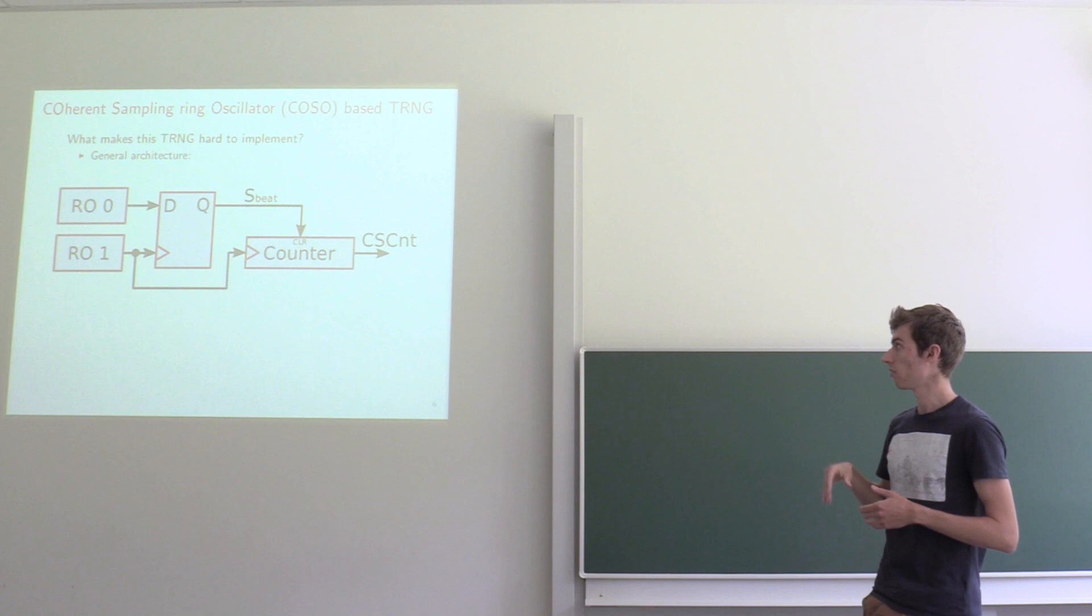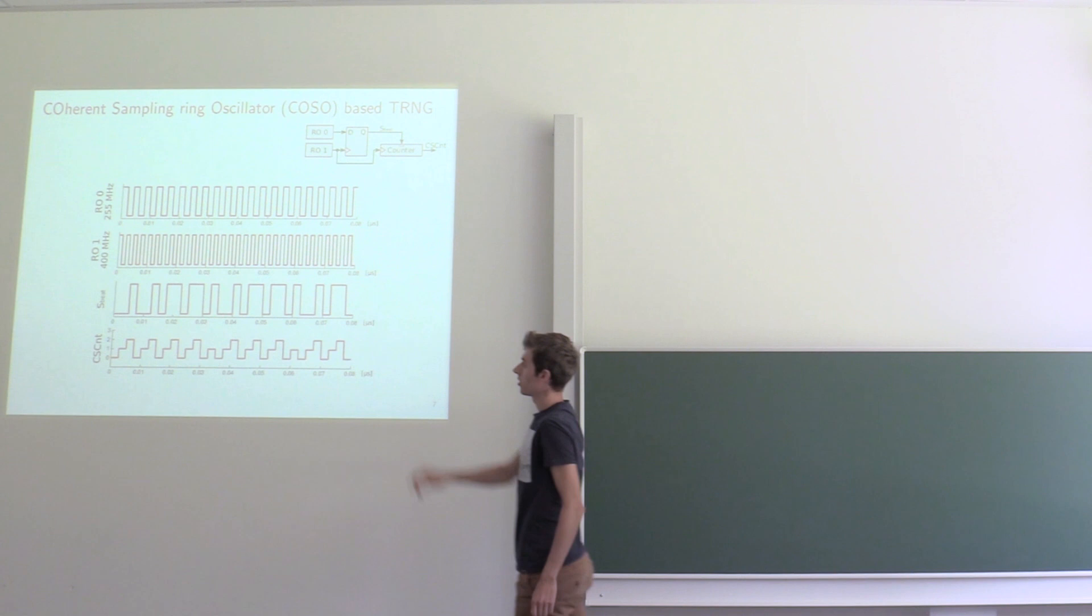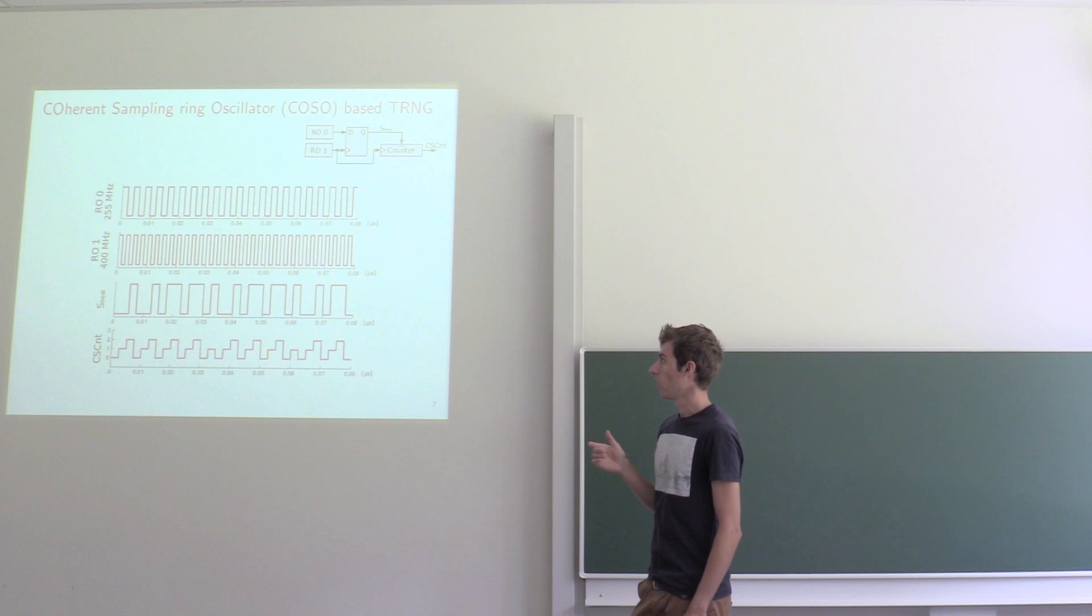I give you a small example here. The second graph shows you the output of the first ring oscillator which is 400 MHz. The other ring oscillator is not very well matched because there is a frequency discrepancy between the two.